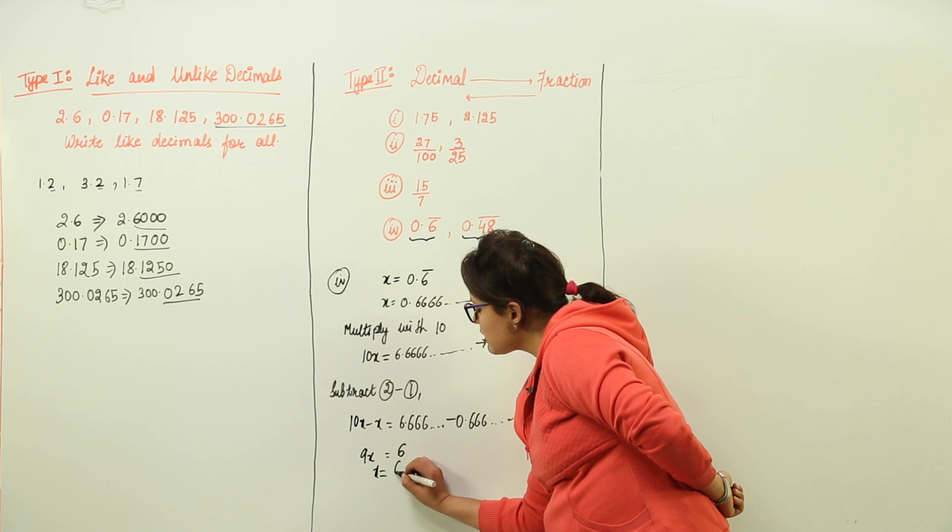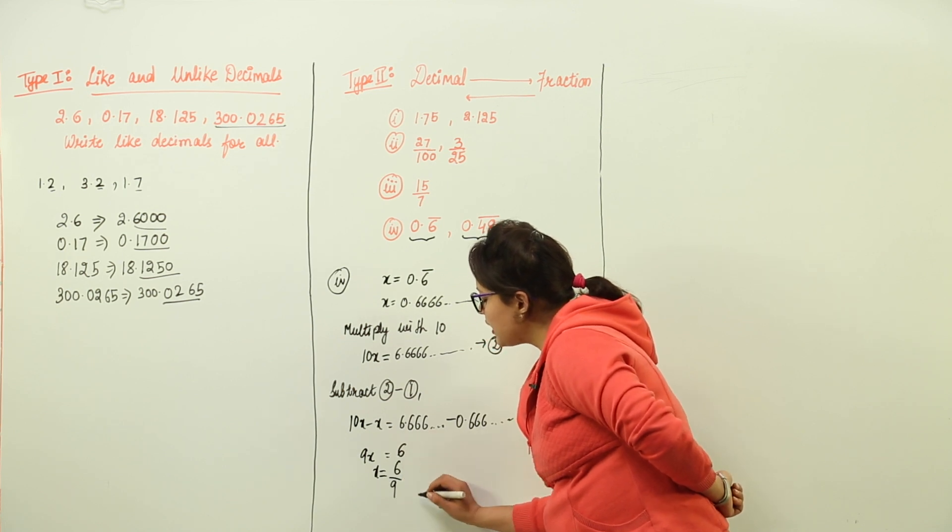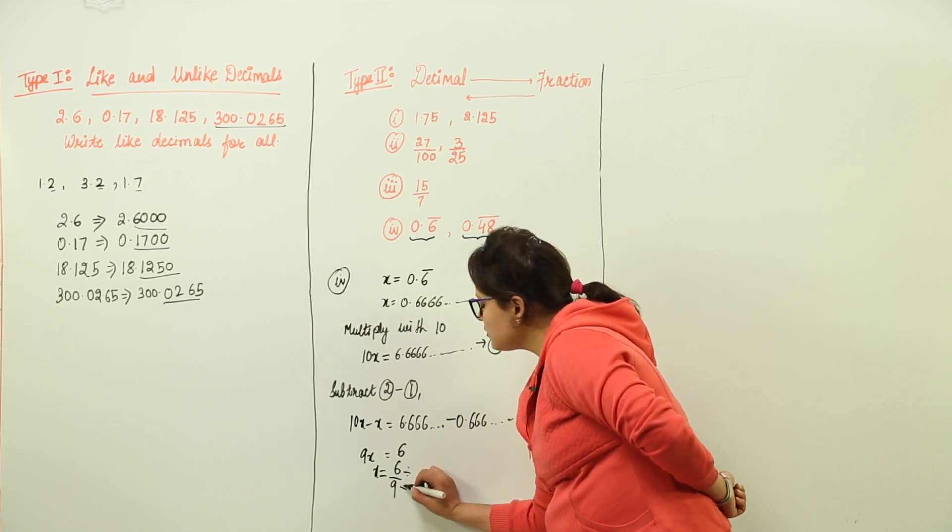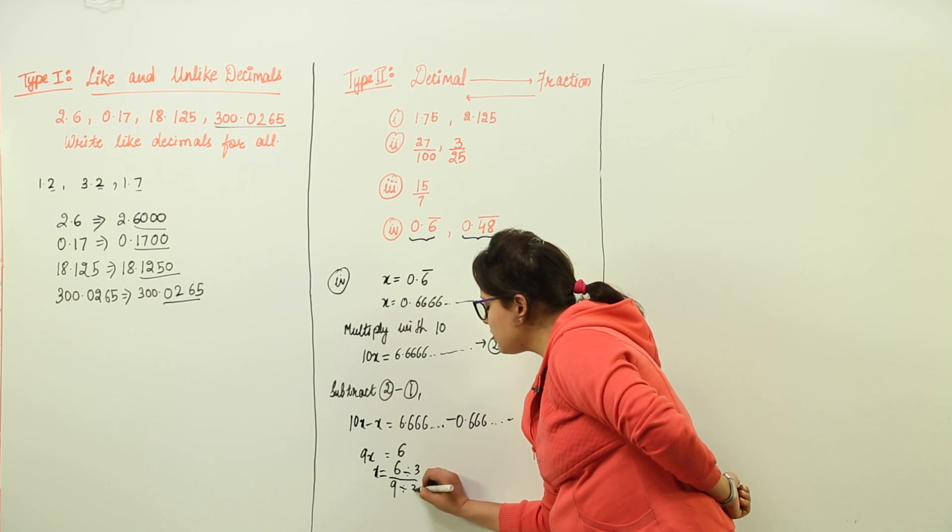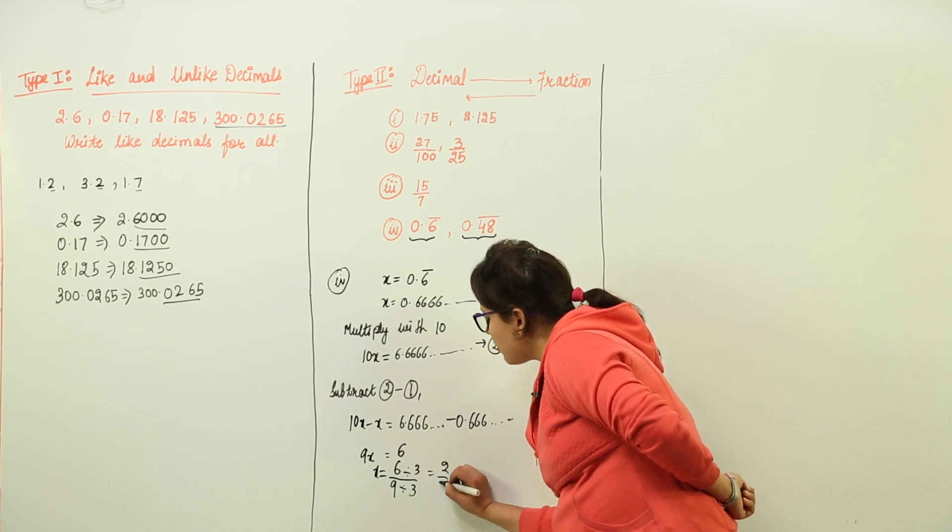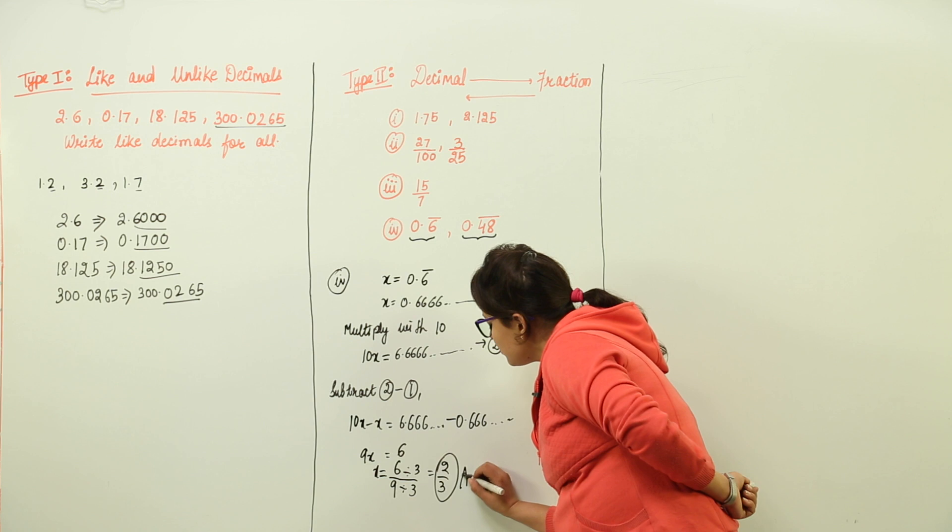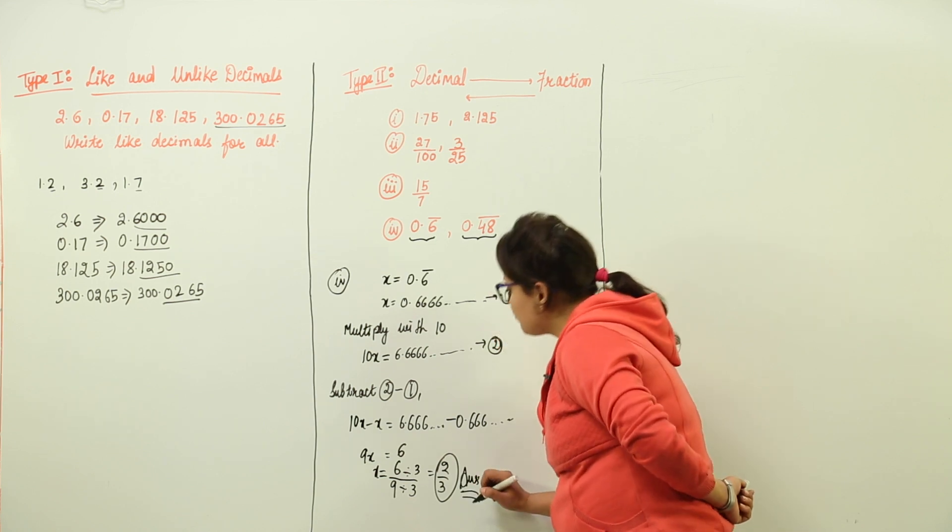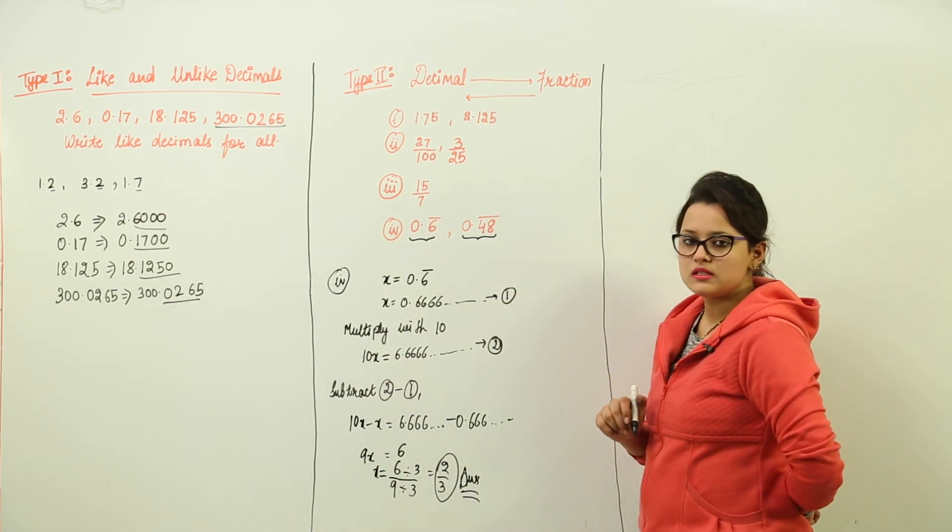So now x is coming out to be 6 upon 9. Solving this further by taking out the factors common, we get 2 upon 3. So 2 upon 3 is the fraction for this decimal.